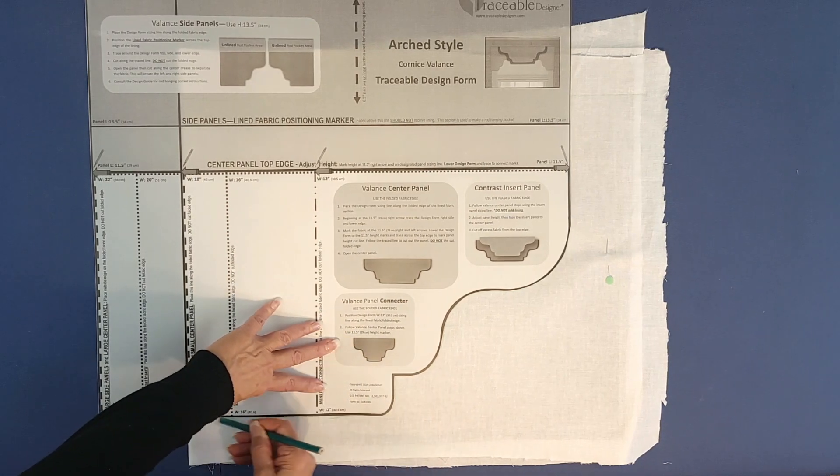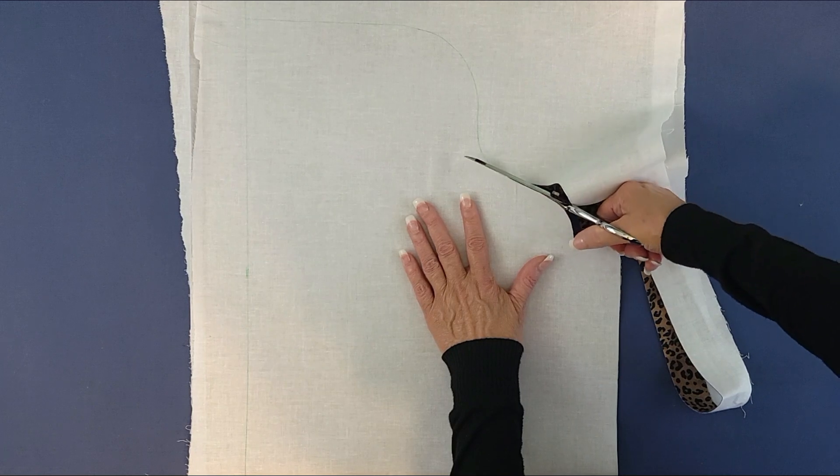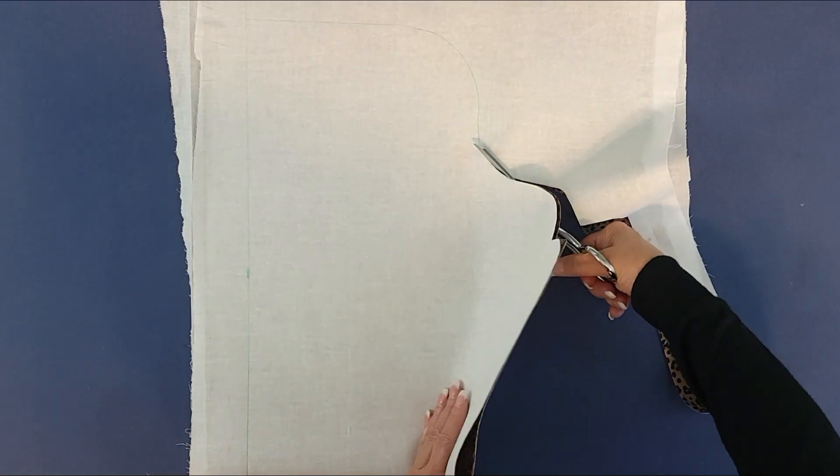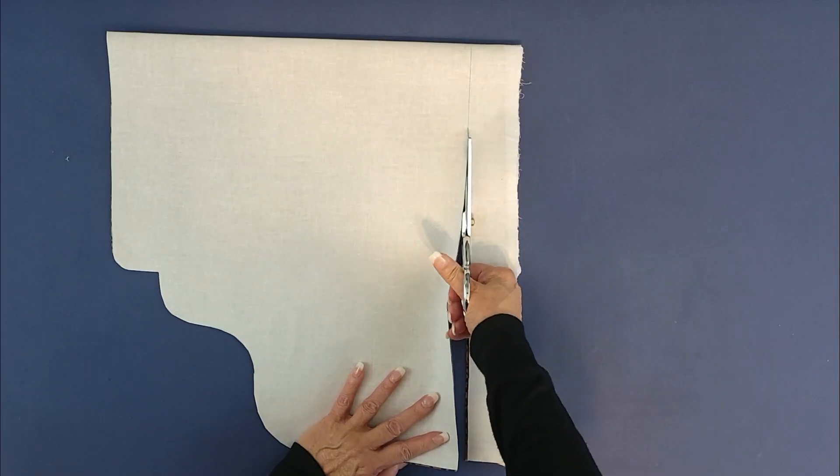This creates a 15-inch deep panel. Carefully follow the trace line around your panel and across the top to cut out your new adjusted long center panel.